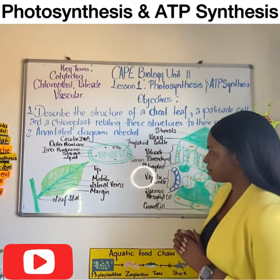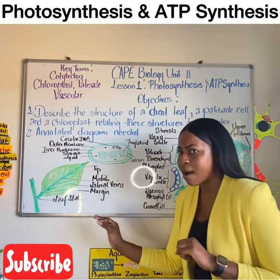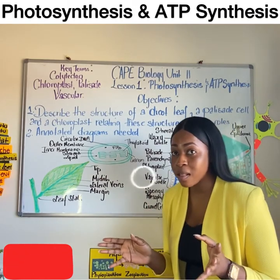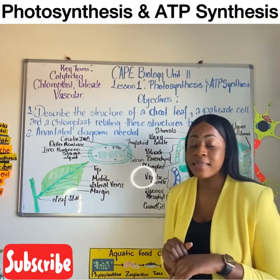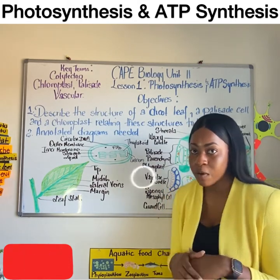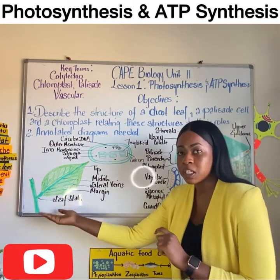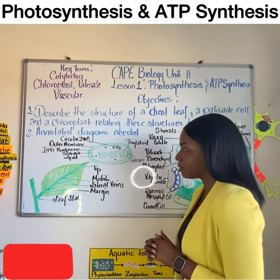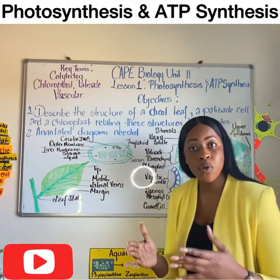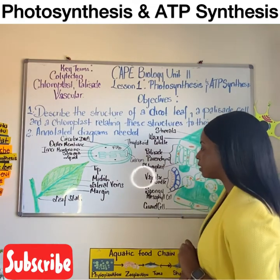Dicot leaf — dicot means two cotyledons. Remember what cotyledons were from CSEC biology? Germination — yes, they are the first two emerging embryonic leaves from a germinating seed. So we say a dicot plant has two seed leaves, or cotyledons. We can also infer from that what a monocot is: having one seed leaf cotyledon.